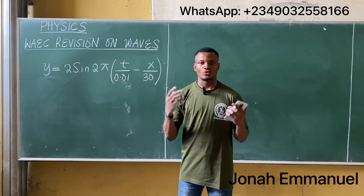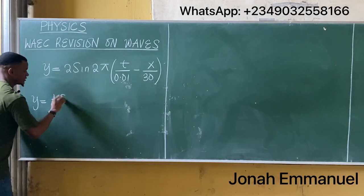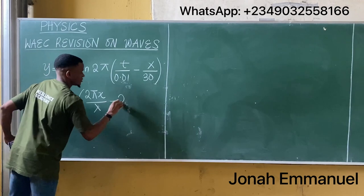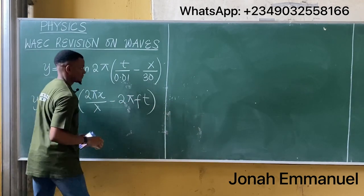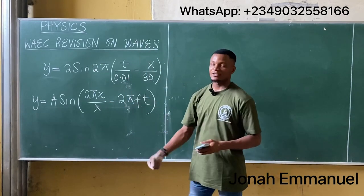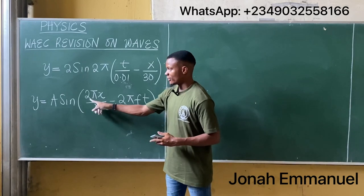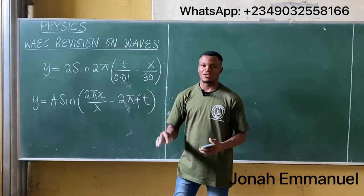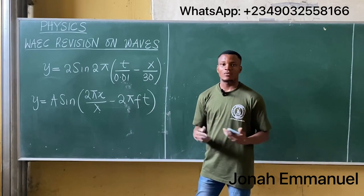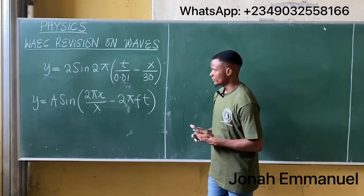To solve this, your first task is to recall the wave equation. The wave equation is given by y = A sin(2πx/λ − 2πft). Here, y represents the vertical displacement of the wave particle, A represents the amplitude, x represents the horizontal displacement, λ represents the wavelength, f represents frequency, and t represents time.